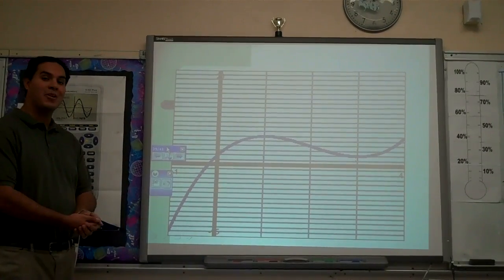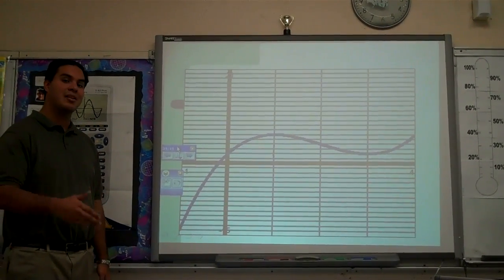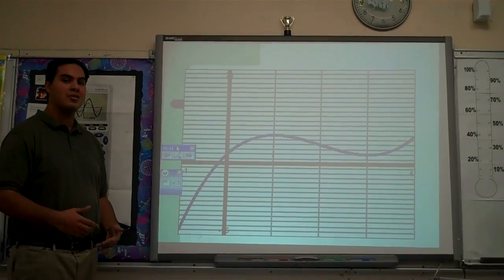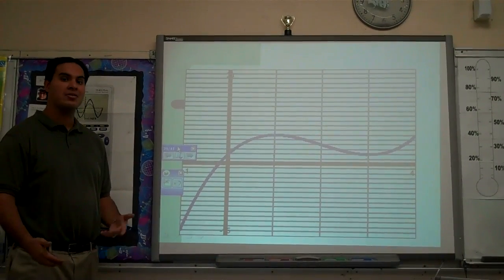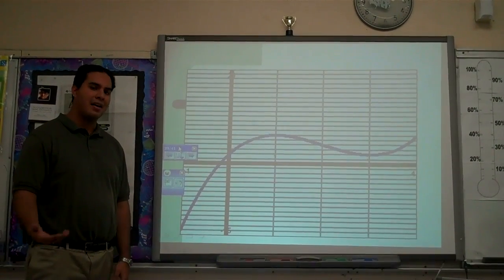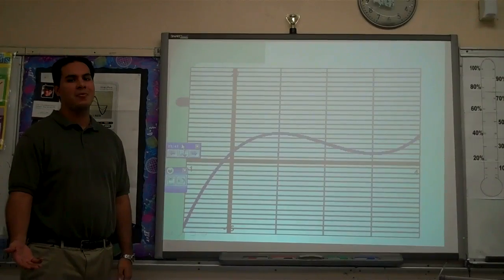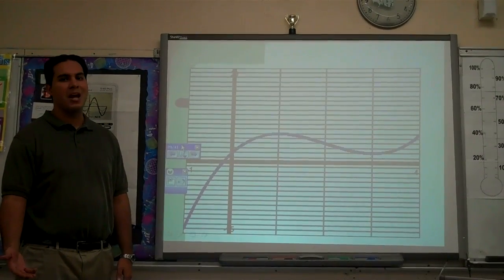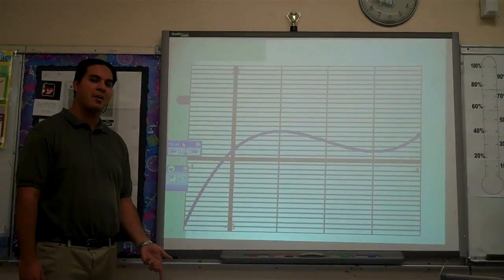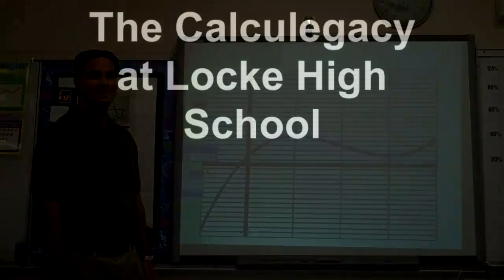And that's pretty much how you find absolute extrema. Take a derivative, set it equal to 0, take your critical numbers and your endpoints, plug them into the function, and compare the output values. The highest output value is your absolute max, the lowest output value is your absolute min. Okay, that's absolute extrema — done!